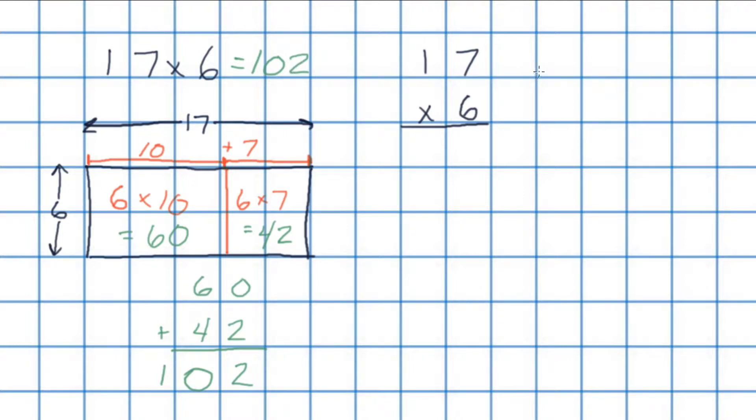Another way we can solve this is using partial product multiplication, also known as a place value model. As we just saw in the area model, we can think of 17 as 10 plus 7. And we have 6 here. We don't need to simplify that. We'll just write it over here. What this does by writing these out in the parts is it will help us when we go to multiply all of the parts of 17 with all of the parts of 6.